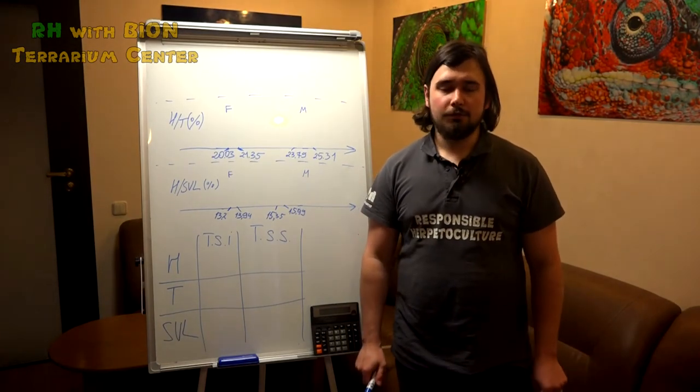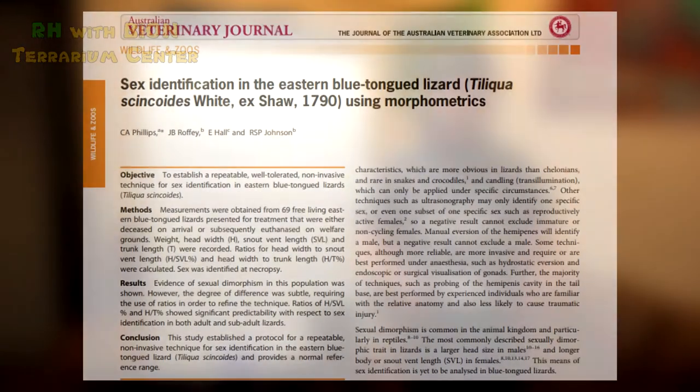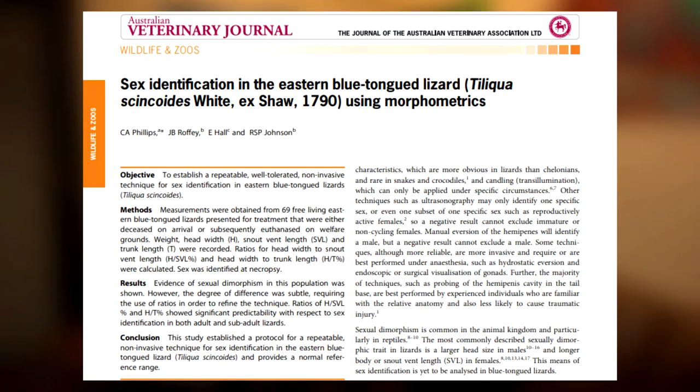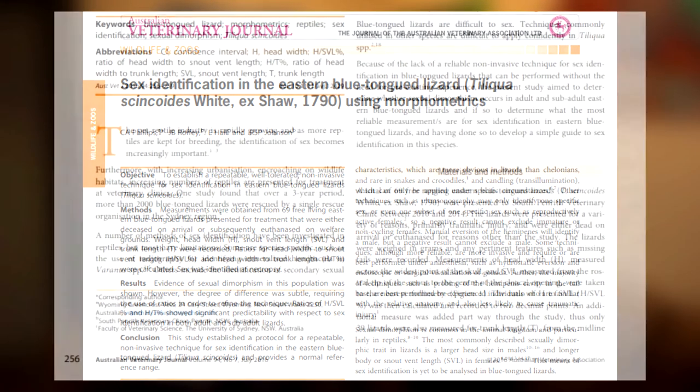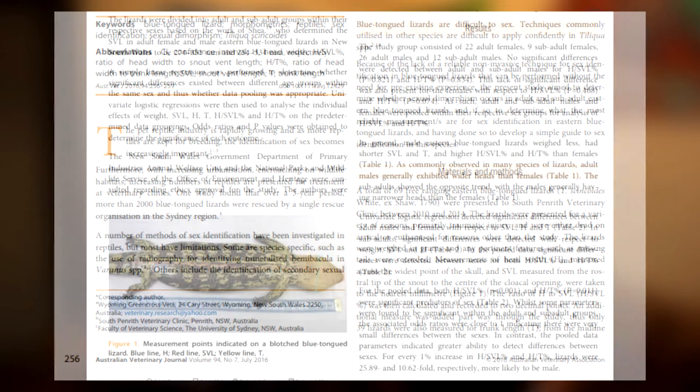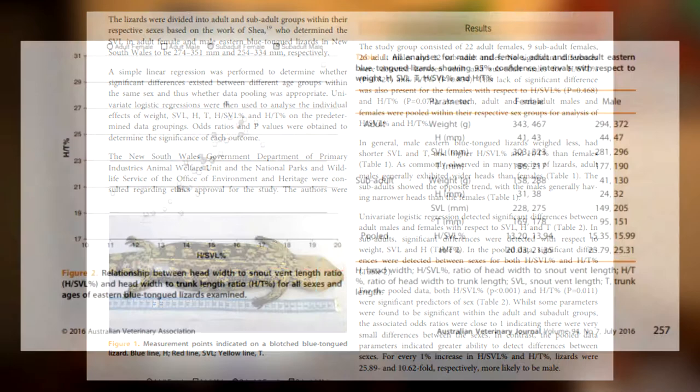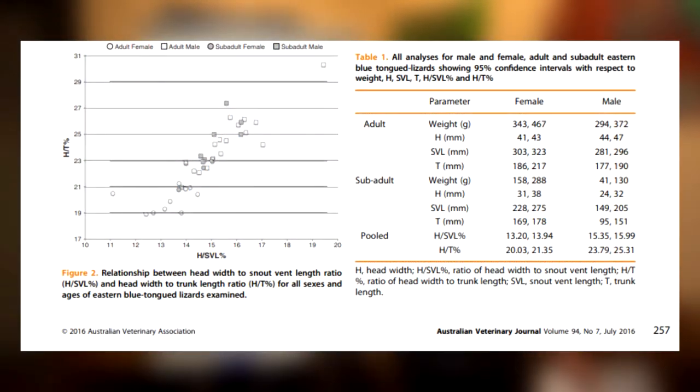I searched a lot of hours on the internet and found a very interesting article called Sex Identification in Eastern Blue Tongue Lizards Using Morphometrics. What does it mean? It means that there are some morphometric parameters that can be measured, and using simple calculations, we can say whether it is a male or a female with quite high reliability.